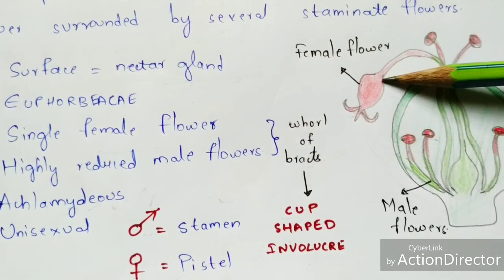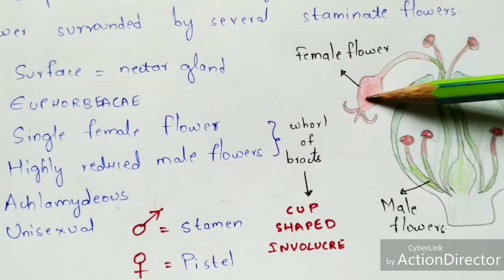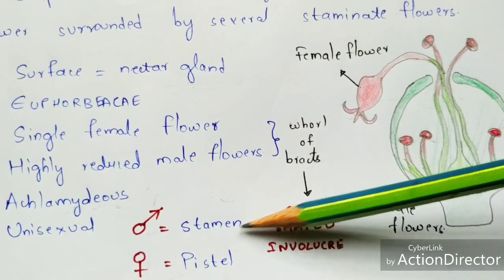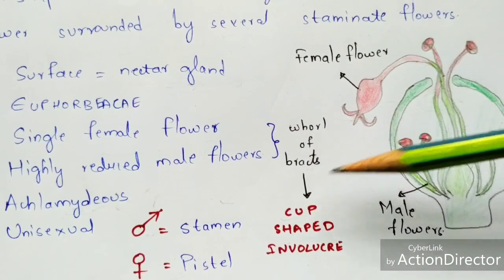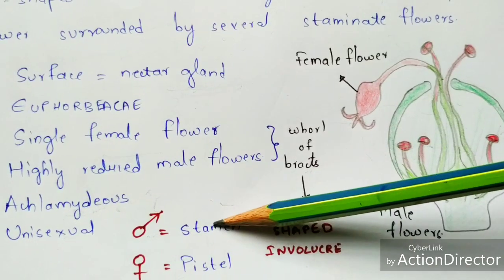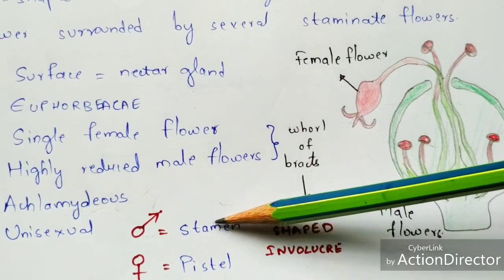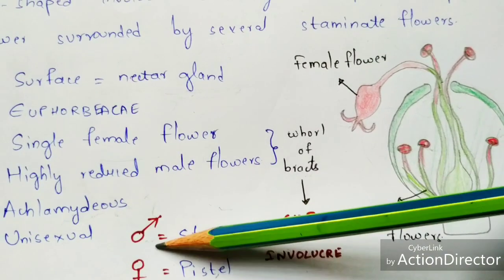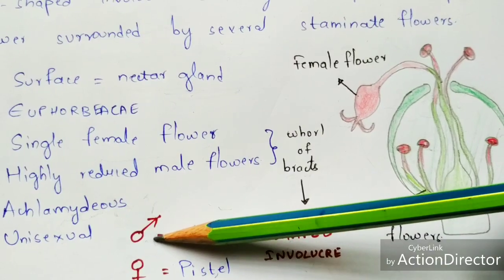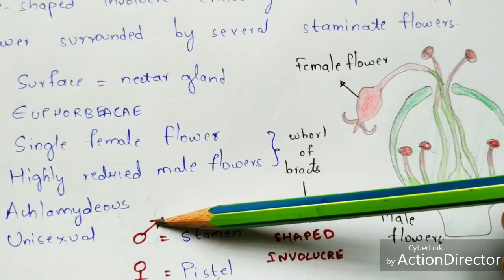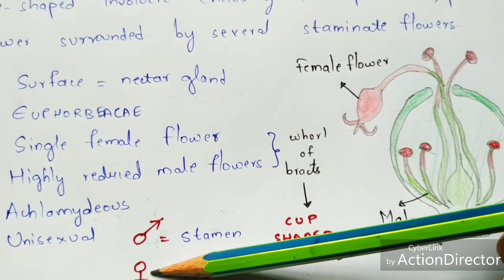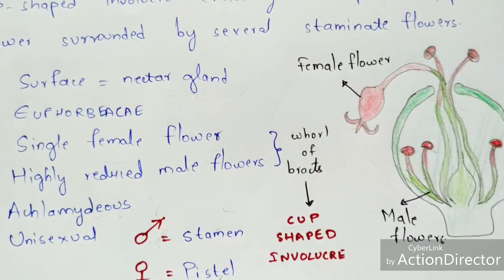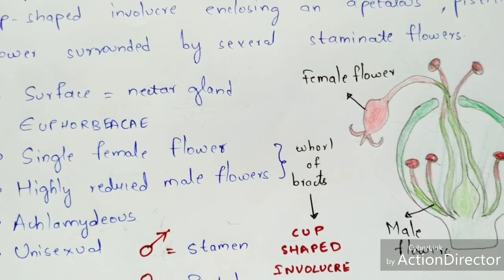The flowers are unisexual, meaning they consist of either female flowers or male flowers. The male flowers are represented as stamens and the female flowers are represented as pistil. So this one is male and this is female. This is about the cyatheum inflorescence.